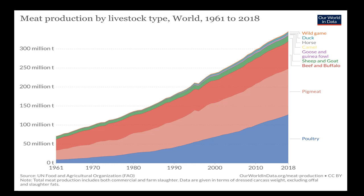Cattle meat production — meaning beef and buffalo meat — has more than doubled since 1961, increasing from 28 million tons to 68 million tons per year in 2014. Another interesting point: in 1961 poultry meat accounted for only 12% of global meat, whereas in 2013 its share tripled to around 35%. As a result, beef and buffalo meat as a share of total meat production has nearly halved to only 22%.